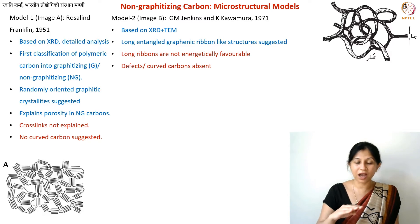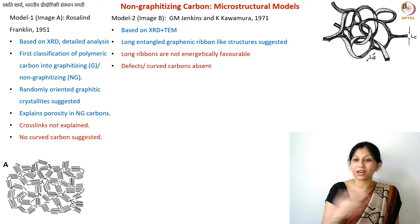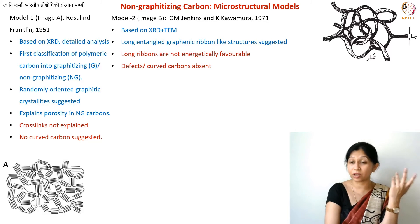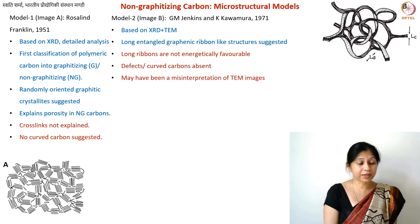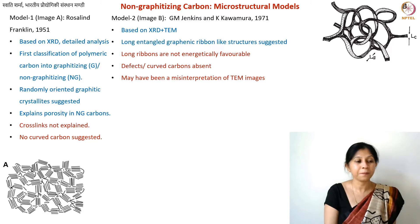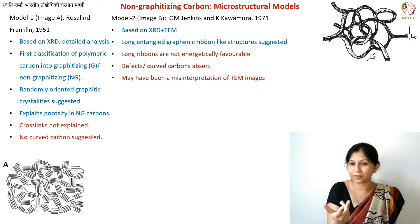Altogether, it looks like a not-so-favorable geometry for carbon materials to have these very long ribbons. If you have long ribbons with nicely stacked arrangements and very few non-six-membered rings, it looks almost like you might eventually get graphite — maybe not very long crystallites because of entanglement, but the defects and curved structures were not given much consideration. There may also have been some misinterpretation of TEM images, because when you see only the edges, it sometimes looks like a ribbon.